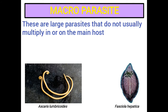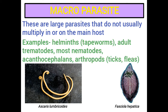Macroparasites: These are large parasites that do not usually multiply in or on the main host. Examples of macroparasites include helminths such as tapeworms, adult trematodes, most nematodes, acanthocephalans, and arthropods such as ticks and fleas.